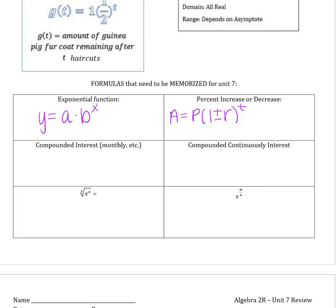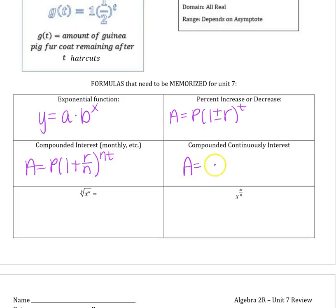Compound interest is a equals p times 1 plus r divided by n, to the n times t. The n is the number of compounding periods per year — if it's monthly, n is 12. If it's compounding continuously, your formula is a equals p times e to the rt, where e is a constant. You can find e in two locations on your calculator: the ln button and the divide button with second.